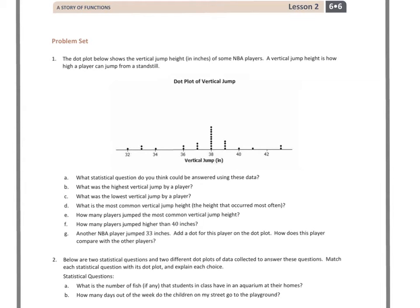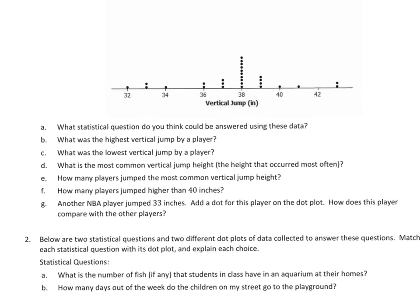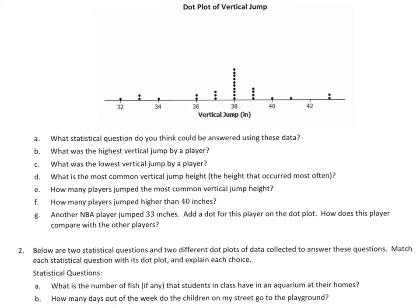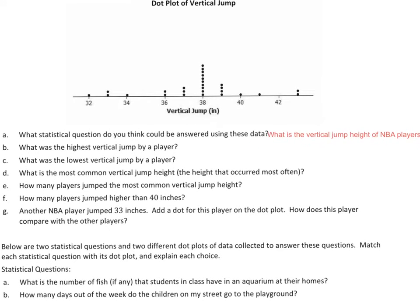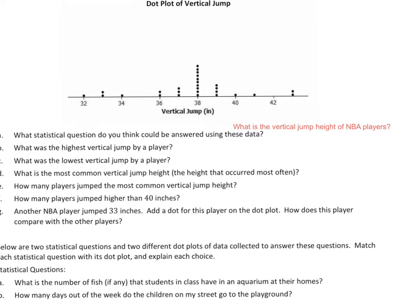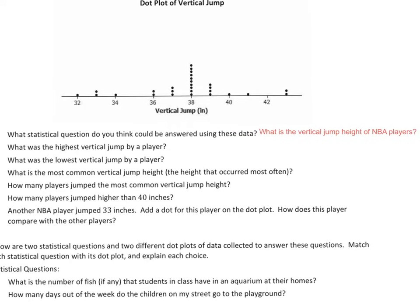So we have to answer some questions based on this. So I'm going to zoom in here and we're going to go to A, and I'll type in the answers on this as we go along. So A says, what statistical question do you think could be answered using these data? Meaning the different points on there. And we already know what it's about, so my question could be as simple as, what is the vertical jump height of NBA players? So there it is, and I'm going to slide this over and try to get it lined up there. Put it just above, because I want to make sure we can read the question and the answers.